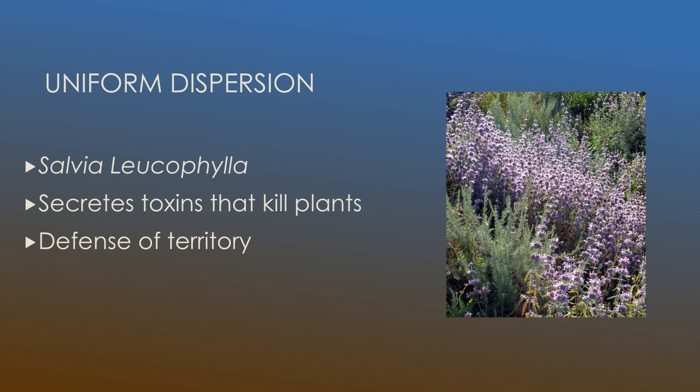Another good example of uniform dispersion is the Salvia leucophylla and this is a plant that secretes toxins that kill other plants around it. The interesting thing about this is that each plant will form a sort of radius in which no other plants could form next to it because the toxins that it secretes will actually kill them. And so this leads to a sort of uniform dispersion where all of the individuals have a space between them and this leads to a defense of their territory because no other individuals will come near it.